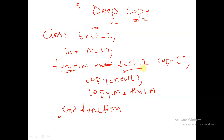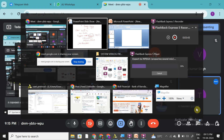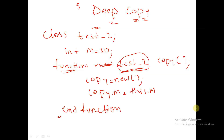The return type of this function is test_2. In SystemVerilog, the return type of a function may be of a class data type also. So here the return type is of type test_2, meaning this function is returning an object. We are creating an object inside the function and returning it when we call this function.